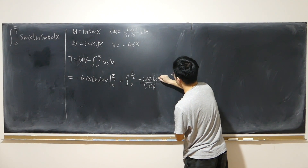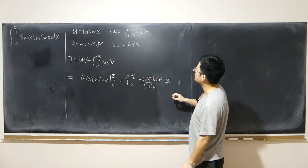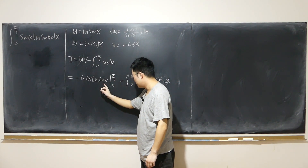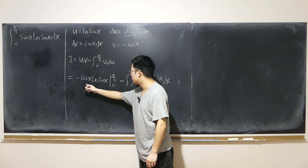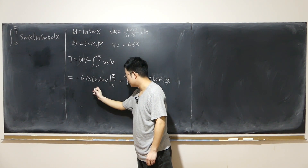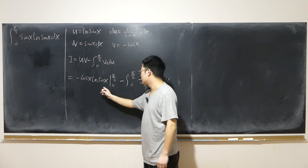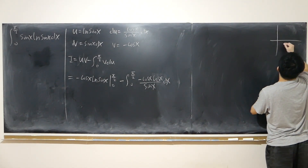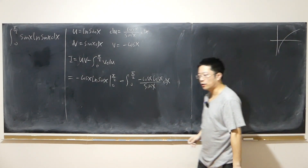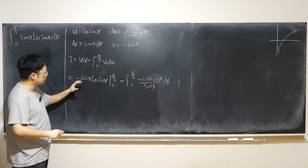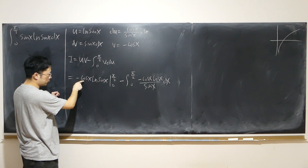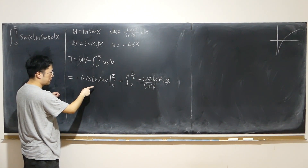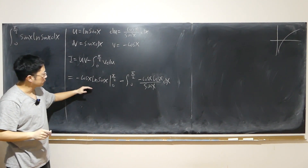Here is where the obstacle is. Our first difficulty is that this boundary term is problematic. Inserting π/2 is no problem: we have log(1) = 0, times cosine(π/2) = 0. But inserting 0 gives log(0), which approaches negative infinity. And cosine(0) = 1, so we get 1 times negative infinity — that's the problem. Pause the video and give it a try if you like.